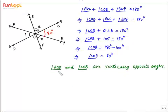Angle AOD and angle COB, that means this angle and this angle are vertically opposite angles and we know that vertically opposite angles are equal. So, this implies angle AOD is equal to 80 degrees. We have found out the value of angle COB as 80 degrees. So, angle AOD is 80 degrees.